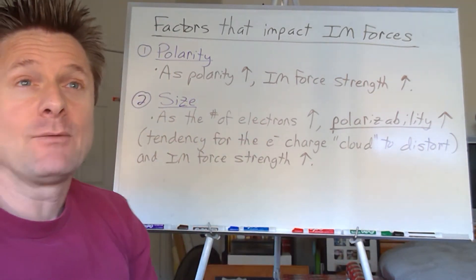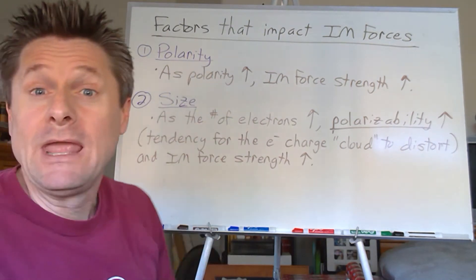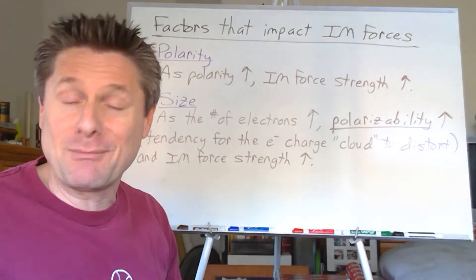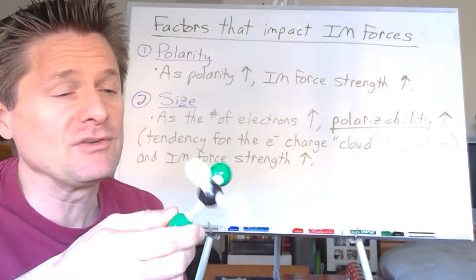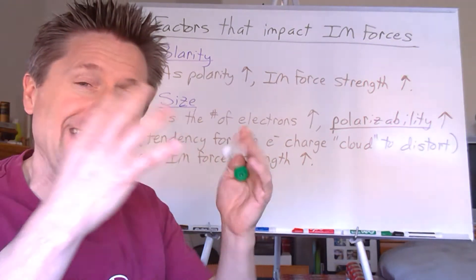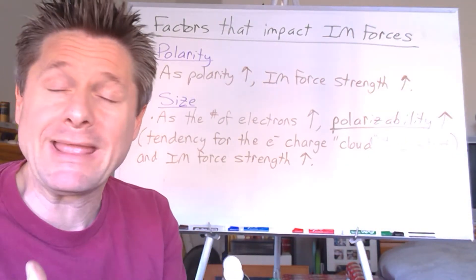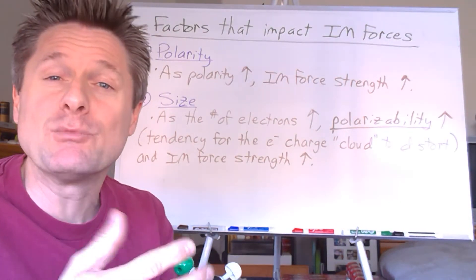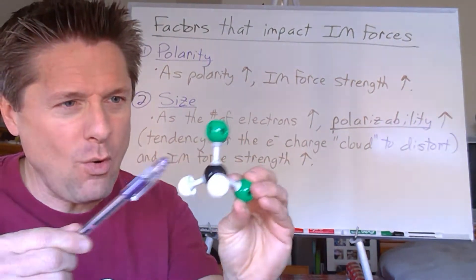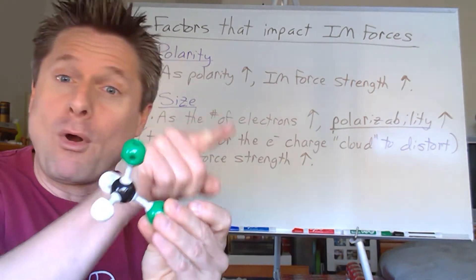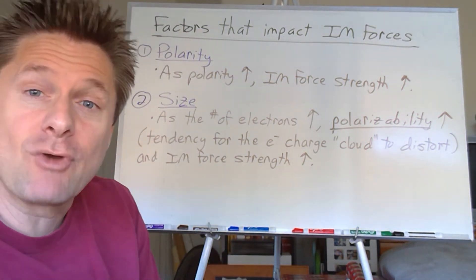The first factor is polarity. Review this if needed: draw Lewis structures, use VSEPR, assess bond polarities using electronegativity differences, then look at the molecule as a whole. Does it have an even distribution of electric charge — making it non-polar — or an uneven, asymmetric distribution — making it polar, with a molecular dipole moment? A polar molecule has more electron density on one side, creating an asymmetric electron cloud.